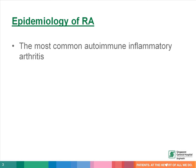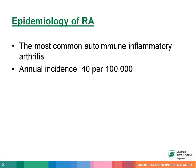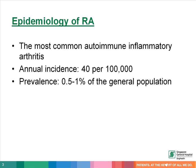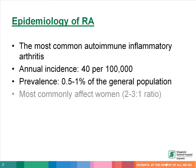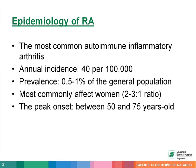Rheumatoid arthritis is the most common autoimmune inflammatory arthritis. It has an estimated annual incidence of 40 per 100,000 people. The prevalence varies in countries, but it is generally accepted that the prevalence of rheumatoid arthritis is 0.5% to 1% of the general population. The disease more commonly affects women, and the peak onset is between 50 and 75 years old.